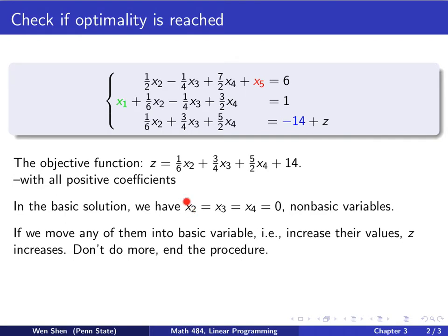If we shall move any one of these three into a basic variable, then the value of that variable, whichever it might be, would become positive, and it will cause the z to increase. You will add a term into it, right? And that's something we don't want because we wish to decrease the z.